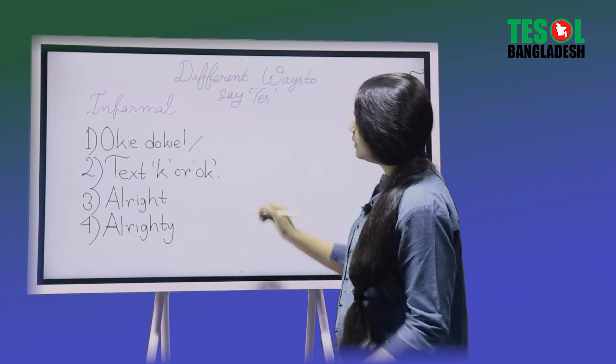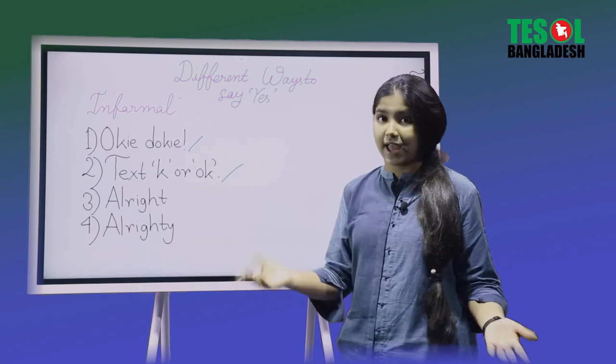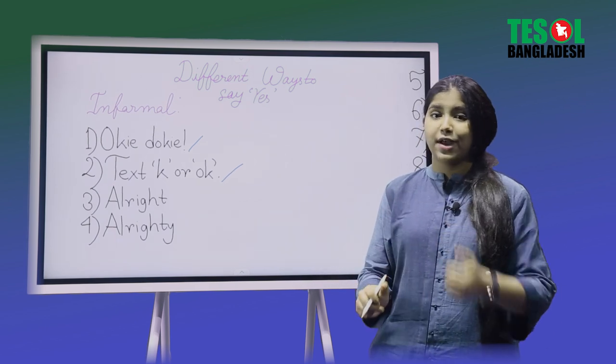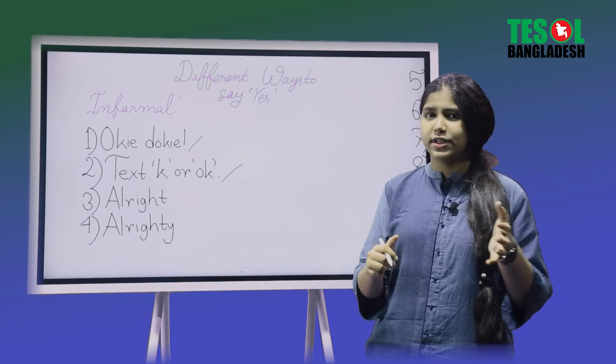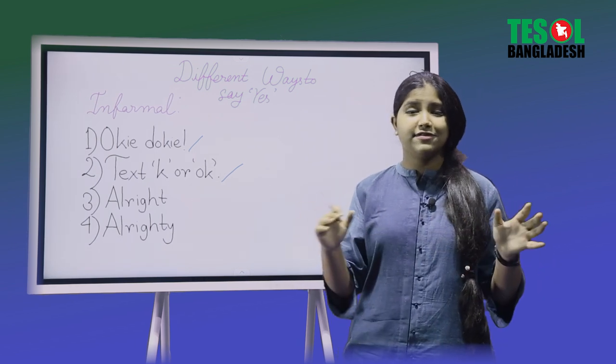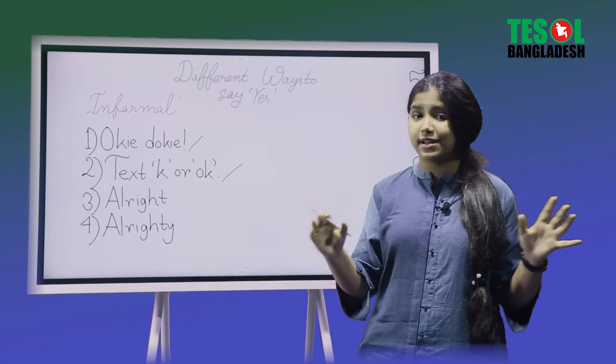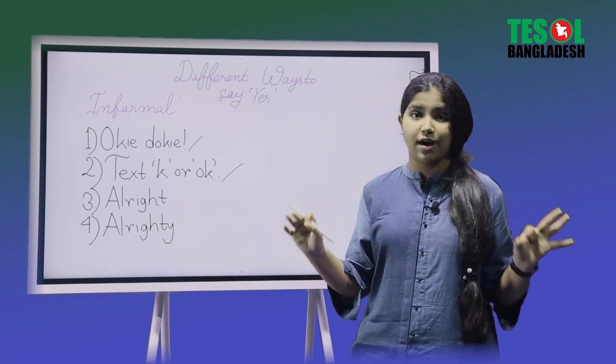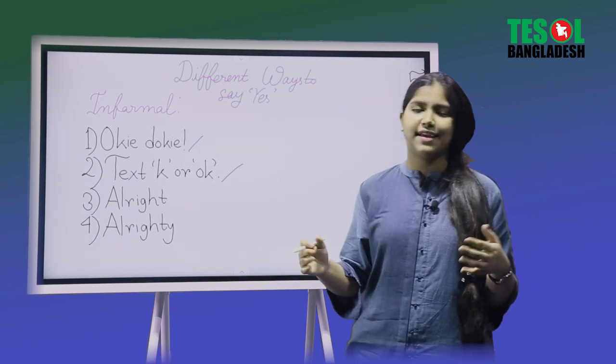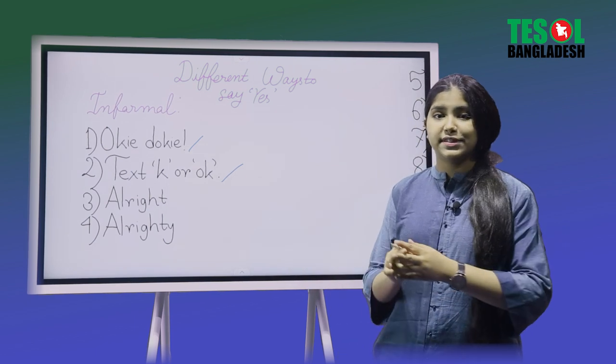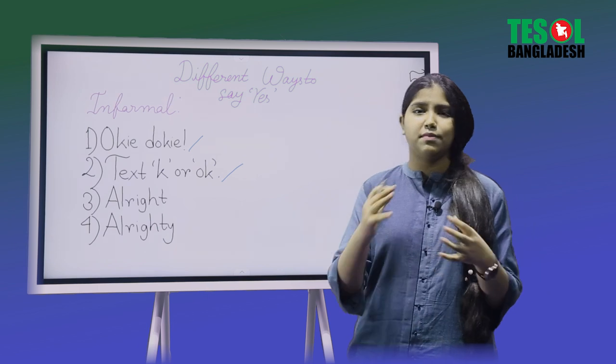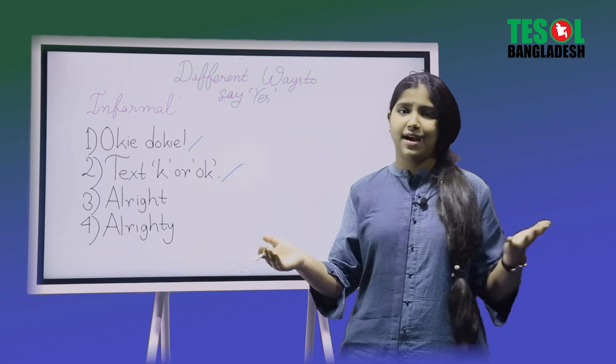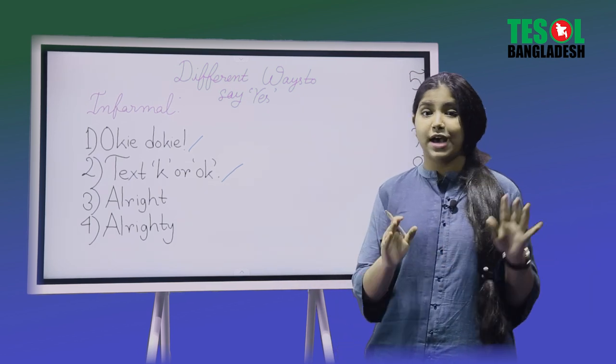Number two says text k or okie. What does this mean? Here I am talking about just texting. When you are sending SMS to someone or when you are messaging someone, then if someone asks you would you like to go to the cinema today, then you say k, I'm in. You just don't pronounce the oh here. Sometimes people do that, they say k, I'm in. So this is also an informal way if you're just messaging with your best friend or a friend or a sibling.